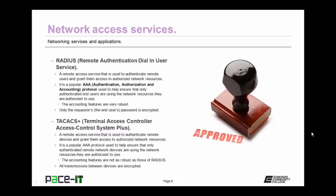Another network access service is RADIUS, Remote Authentication Dial-In User Service. RADIUS is a remote access service used to authenticate remote users and grant them access to authorized network resources. It is a popular AAA protocol — that's authentication, authorization, and accounting protocol. It's used to help ensure that only authenticated end users are using the network resources they are authorized to use. The accounting services of RADIUS are very robust. The only drawback is that only the requester's password is encrypted — everything else gets sent in the clear.